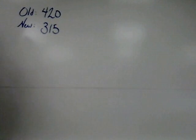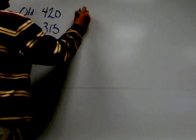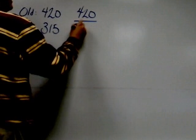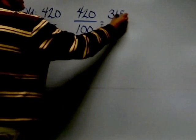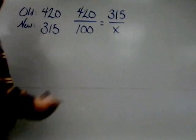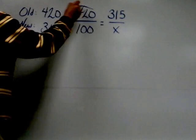So we now have all the information we need to use the old over 100 equals new over X formula. Put 420 over 100 and 315 over X. I have to cross multiply to find X, meaning I'm going to multiply on the diagonals.